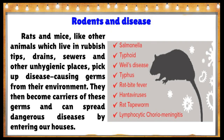Rats and mice, like other animals living in rubbish tips, drains, sewers, and other unhygienic places, pick up disease-causing germs from their environment. They become carriers of these germs and can spread dangerous diseases by entering our houses. Diseases caused by rodents include salmonella, typhoid, Weil's disease, typhus, rat bite fever, hantaviruses, and lymphocytic choriomeningitis.